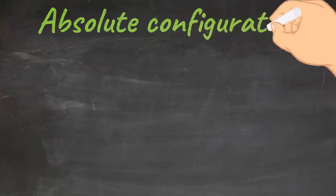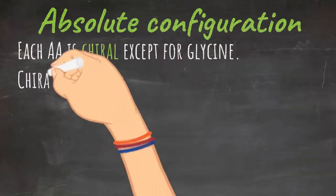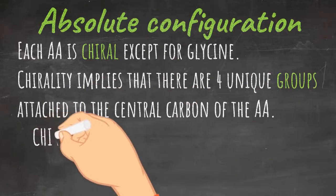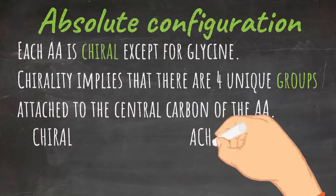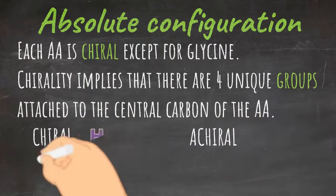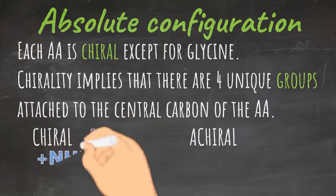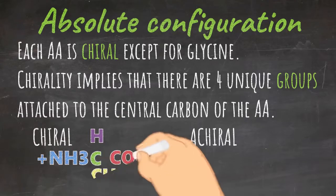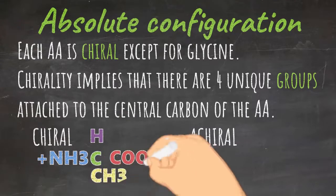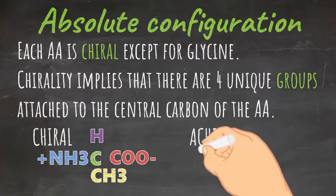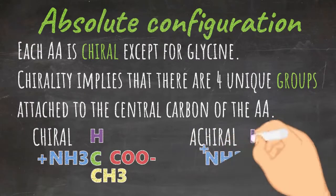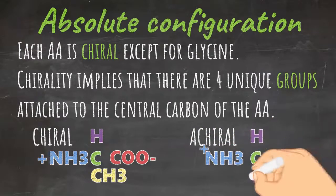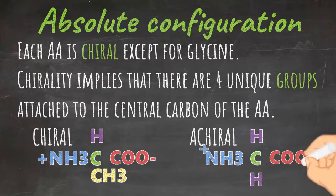In terms of absolute configuration, you should know for the MCAT that each amino acid is chiral except for glycine. Chirality implies that there are four unique groups attached to the central carbon. On the left you can see alanine, which is chiral because it is attached to a CH3 group, whereas glycine is attached to two hydrogens, making it an achiral molecule.